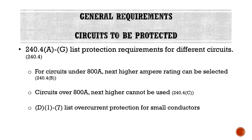Section 240.4 D1 through 7 covers overcurrent protection for small conductors. This section tells you that for 18-gauge, 16-gauge, 14-gauge tap wire and so on, you can only have a maximum size overcurrent protective device of a certain size.